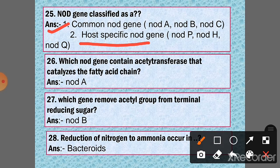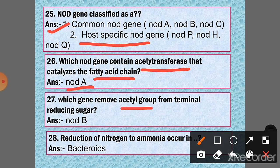Question 26: Which nod gene contains acetyl transferase that catalyzes fatty acid chain? Answer: nod A gene. Question 27: Which gene removes acetyl group from terminal-reducing sugar? Answer: nod B gene.